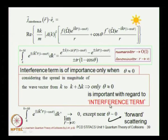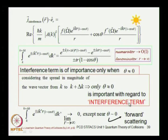Our conclusion is that the interference term is of importance only in the consideration of forward scattering; otherwise it can be discarded, because it consists of oscillatory terms of modulus 1 divided by a denominator which goes to infinity in the asymptotic region.